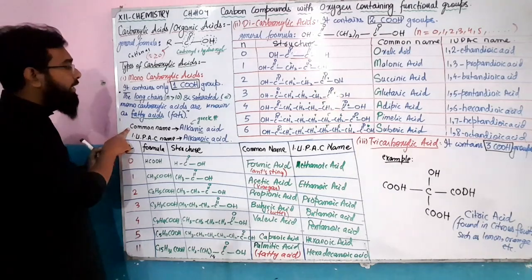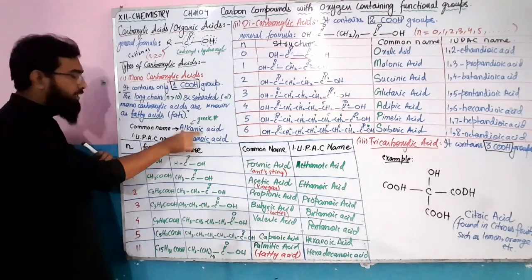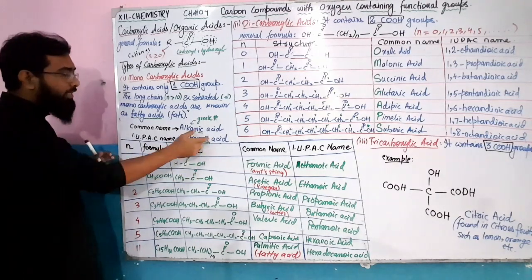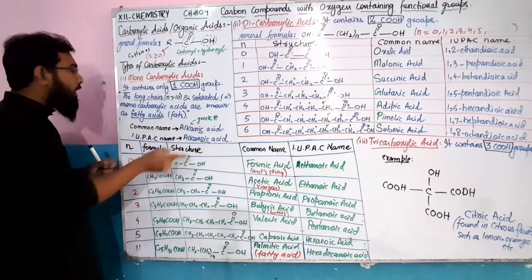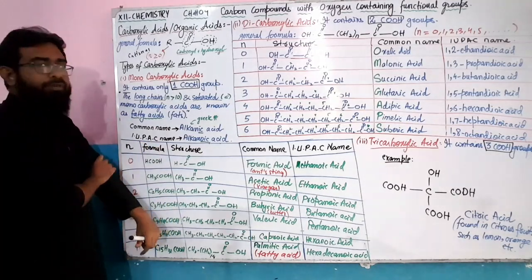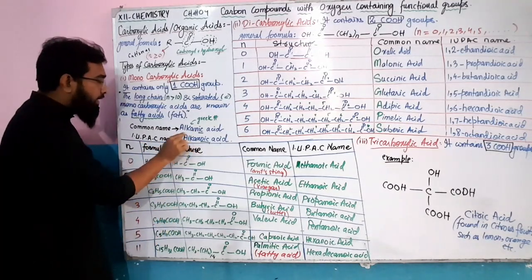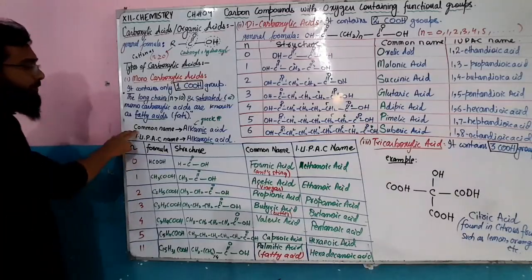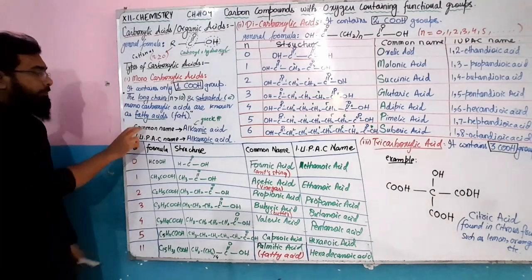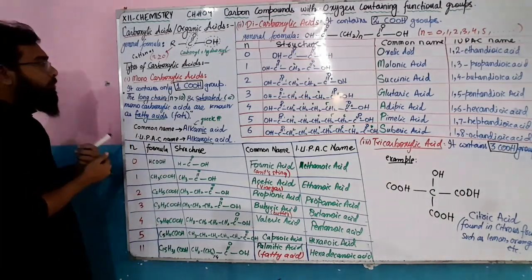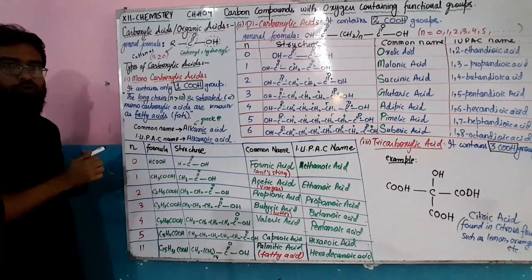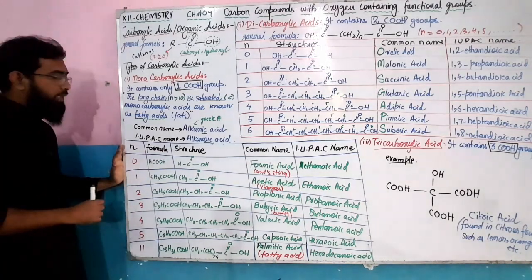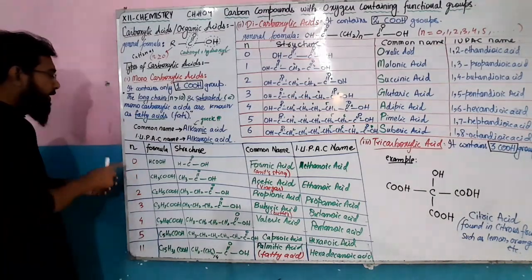The common name of monocarboxylic acids uses a specific suffix system. For IUPAC naming we use the suffix '-anoic acid'. The prefix comes from Greek numbers to indicate the carbon count. For example, the common name and IUPAC name follow consistent rules. I have made a chart of examples of monocarboxylic acids, each having just one COOH group.